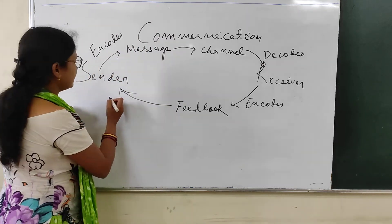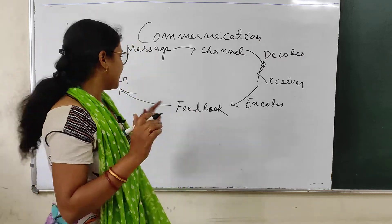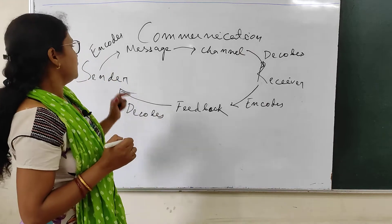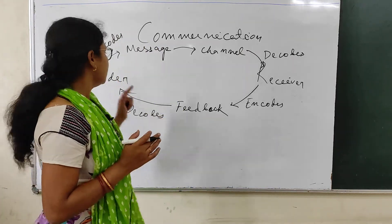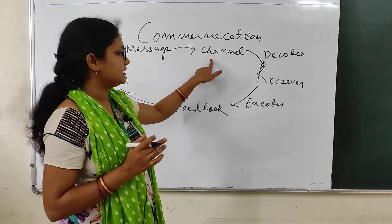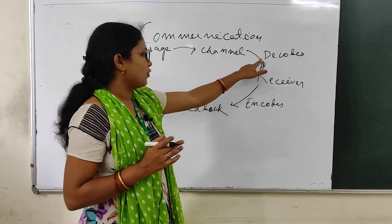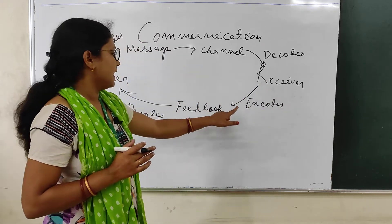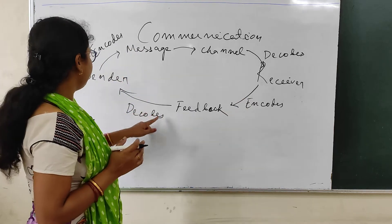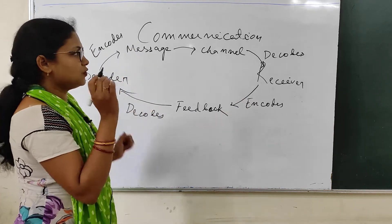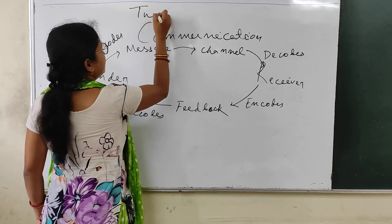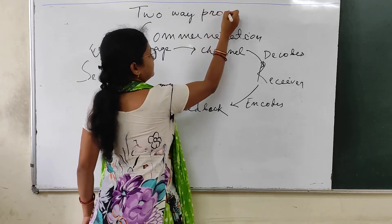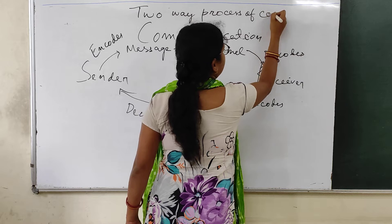The feedback comes back to the sender, and to understand the feedback, the sender needs to decode the message. So, the sender sends the message through a channel to the receiver; the receiver decodes the message to understand it, then encodes and sends feedback back to the sender. This process is known as the two-way process of communication.